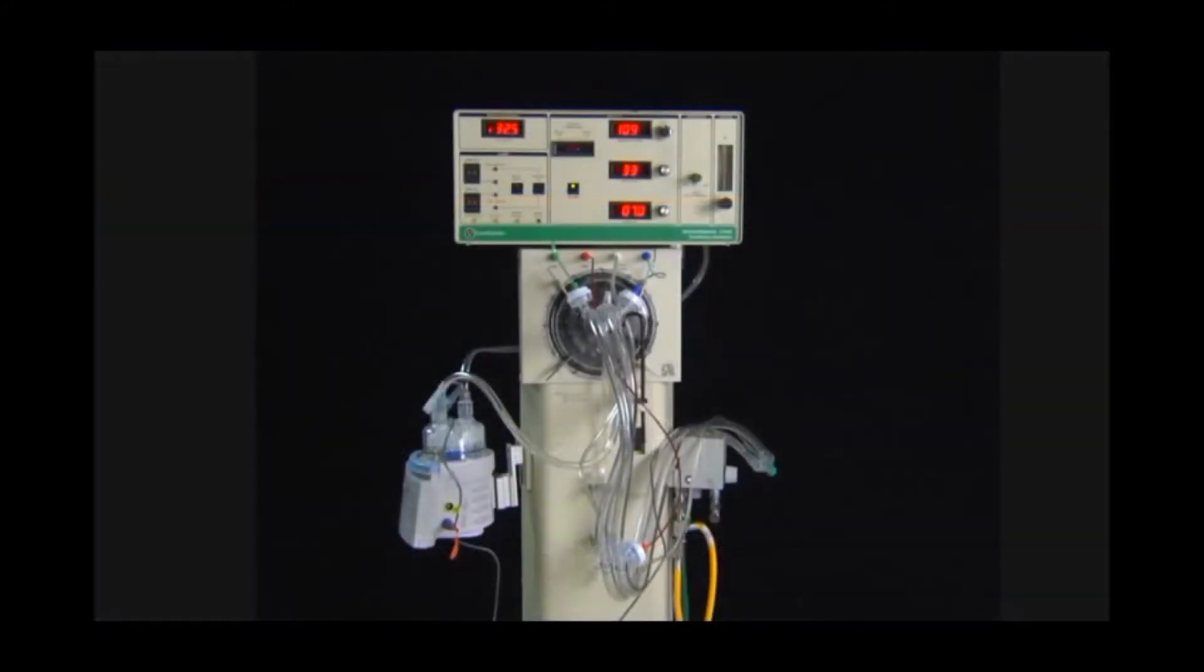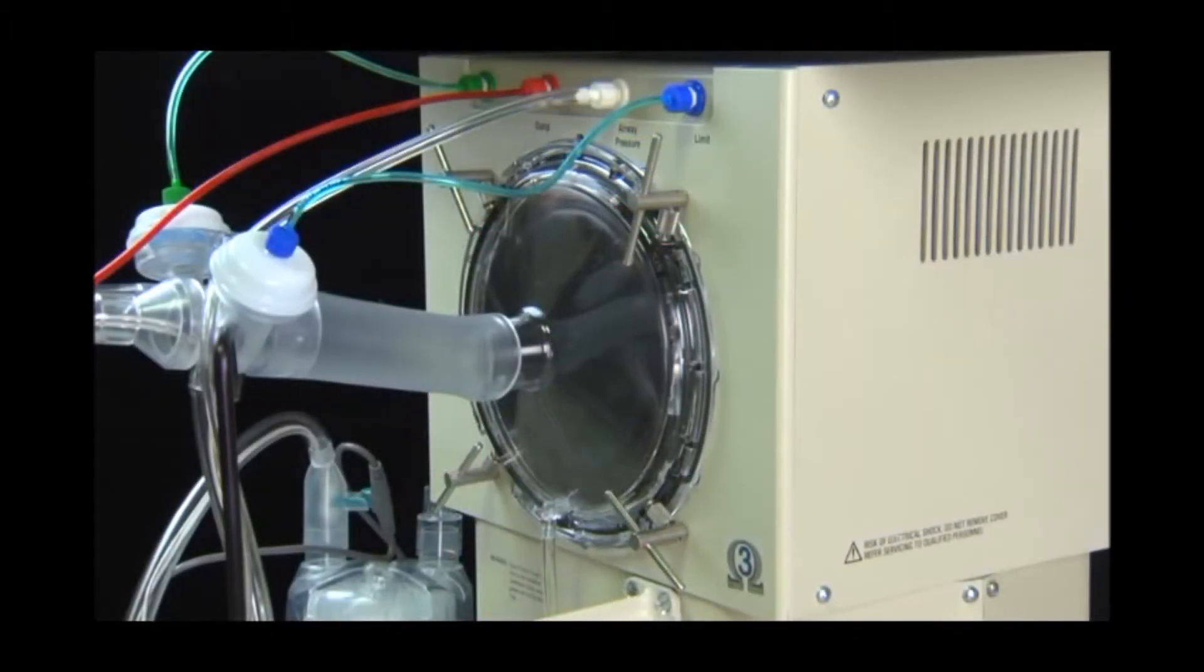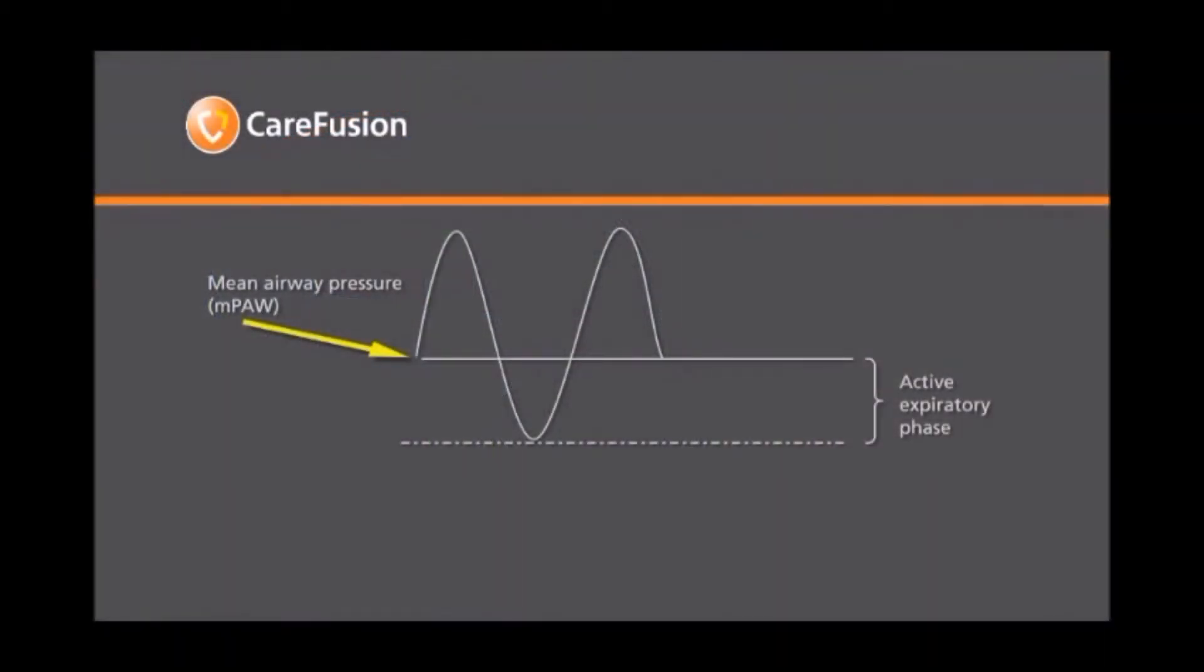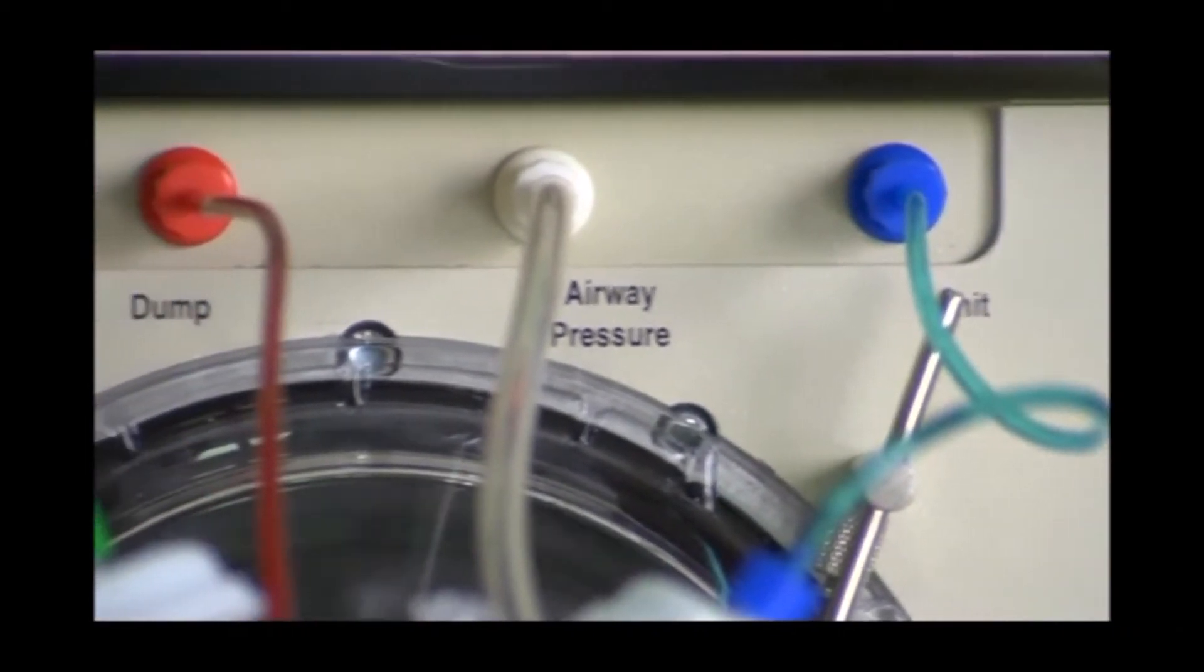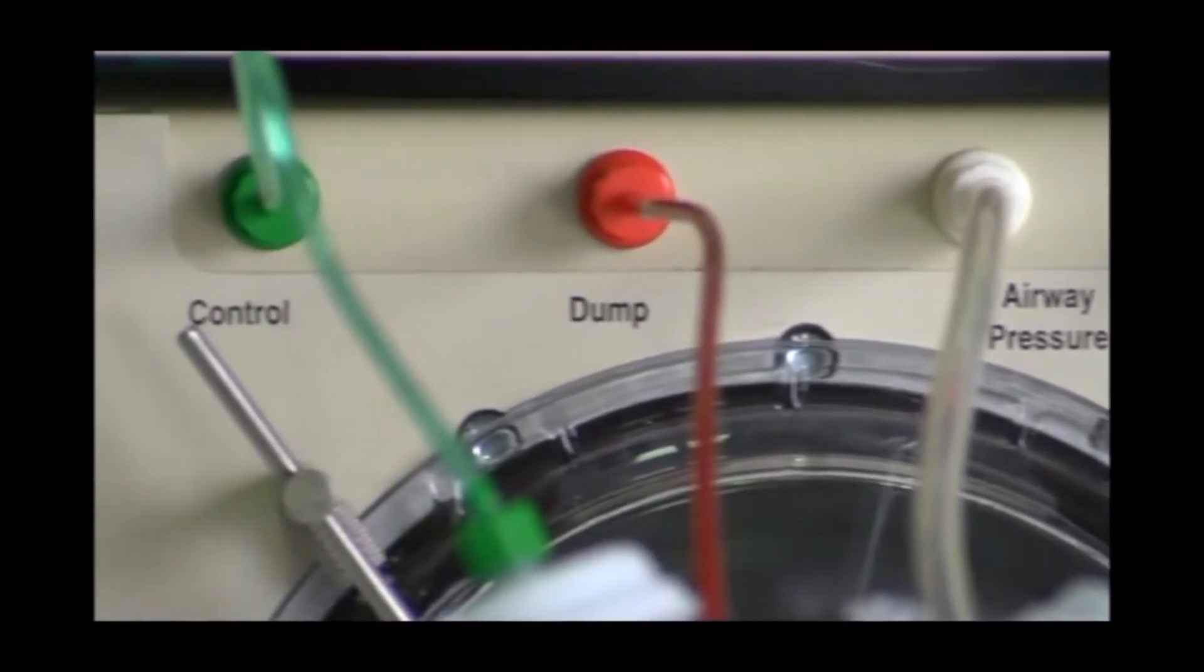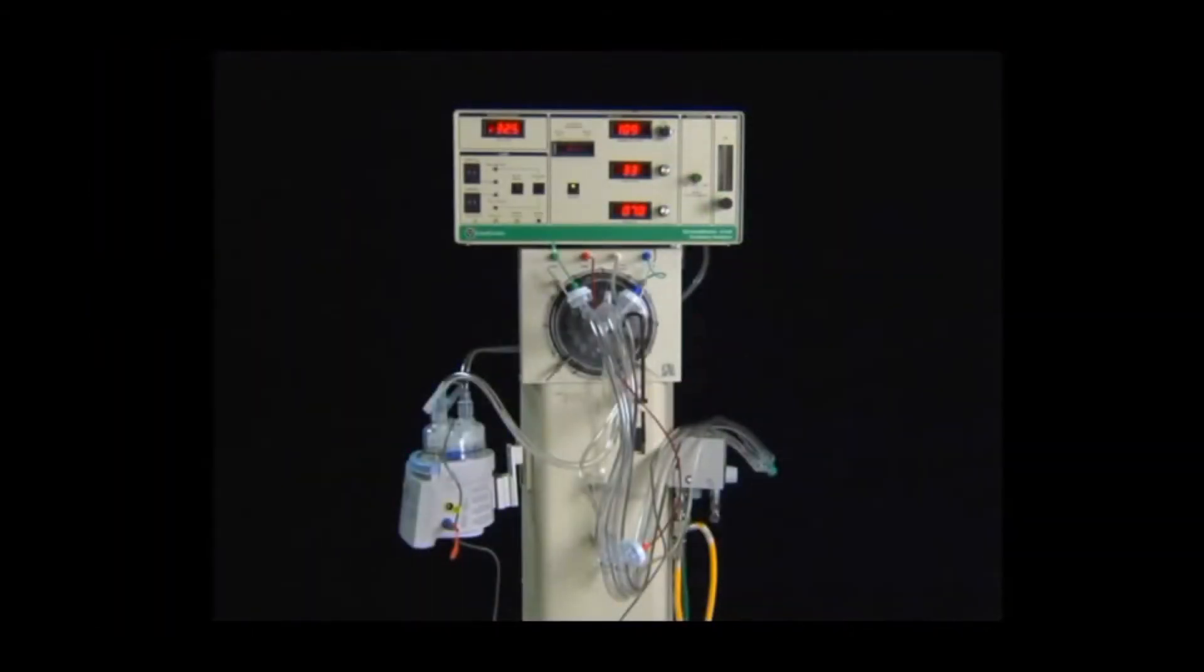While several techniques employ passive exhalation, similar to a conventional ventilator, high-frequency oscillatory ventilation, or HFOV, uses an active expiratory phase. This distinctive feature is what truly defines high-frequency oscillatory ventilation. The CareFusion 3100A and 3100B are very simple devices. These are essentially large CPAP generators with a piston diaphragm oscillator attached. This system allows the 3100 to gently inflate the lungs while superimposing oscillations to ventilate the patient.